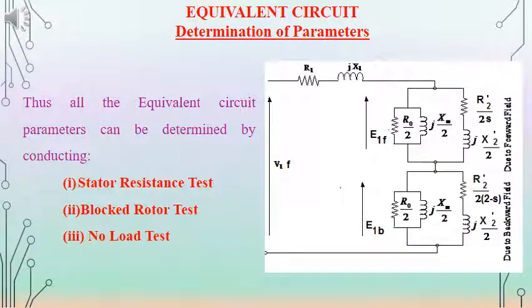The final equivalent circuit is shown in the figure. To find the equivalent circuit parameters of a single phase induction motor, we conduct three tests: blocked rotor test, no load test, and stator resistance test to find R1. In this section, we discussed the equivalent circuit of a single phase induction motor, how to find parameters from different tests, and the double revolving field theory.